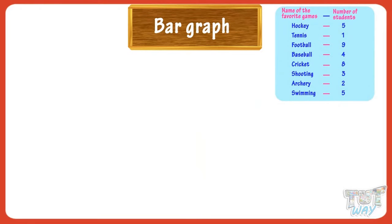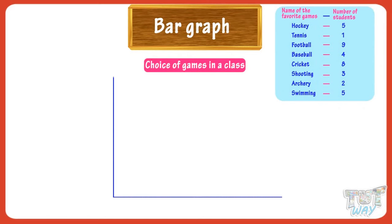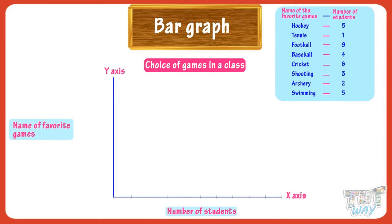We have two types of information: numeric values giving the number of students, and textual values giving the names of their favorite game. First, we can give a title to our chart — it can be 'Choice of Games in a Class.' We can give titles to each axis. Let the x-axis be the number of students and the y-axis be the name of the favorite game. The x-axis represents the number of students so it will be the scale. The number of students is in the range of 1 to 9, so let the scale be numbered 1 to 10.